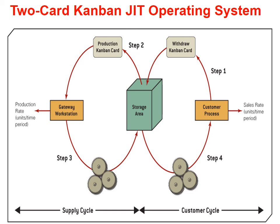Step one begins with the customer sending a withdraw Kanban card to the storage area. Step two, a production Kanban card is sent to the work station, which then releases output — representing the production rate per unit time period. Step three, the full container is returned to the storage area and then delivered to the customer.